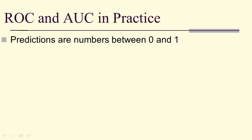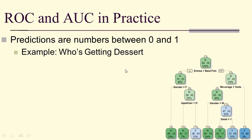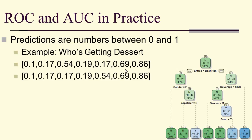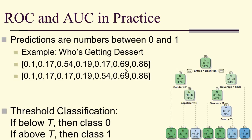In practice, predictions are numbers between 0 and 1. For example, in the 'who's getting dessert' data, the leaf values are 0.1, 0.17, 0.5, 0.19, 0.17, 0.69, and 0.86. We use threshold classification: pick a capital T between 0 and 1. If the prediction is below T, classify as class 0; if above T, classify as class 1.